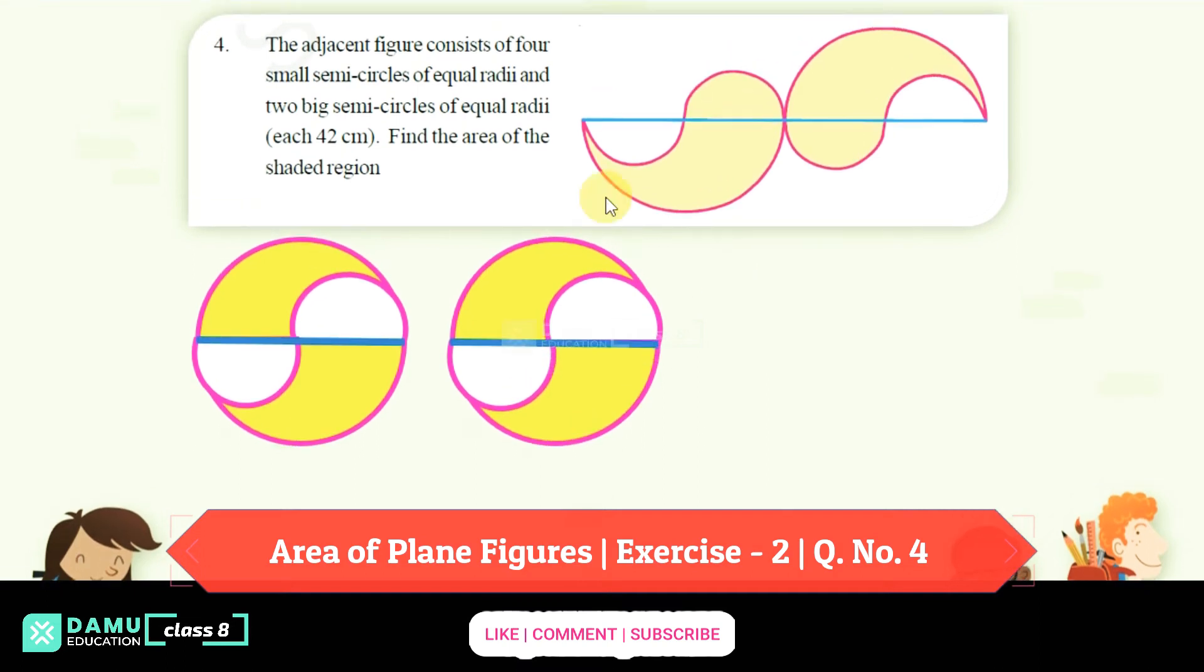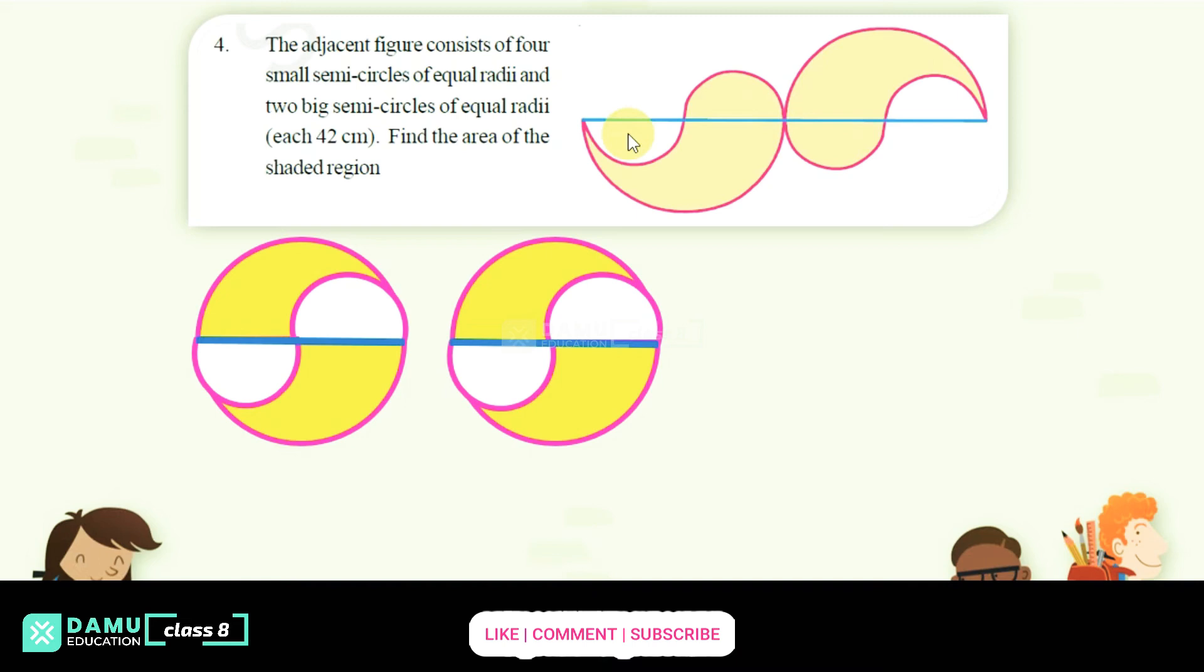In this module we are going to discuss the adjacent figure consisting of four small semicircles of equal radii and two big semicircles of equal radii.